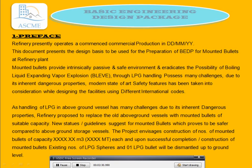The EDP mounts the bullet at the refinery plant. The mounded bullet provides an intrinsically safer environment by reducing the possibility of a Boiling Liquid Expanding Vapor Explosion (BLEVE) through the LPG handling process. The main challenges arise due to the inherent dangerous properties of LPG. The refinery proposes to replace the above-ground vessel with the mounded bullet, which is proven to be safer compared to above-ground storage vessels.